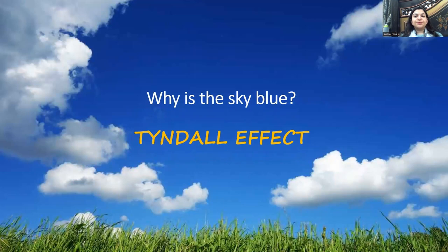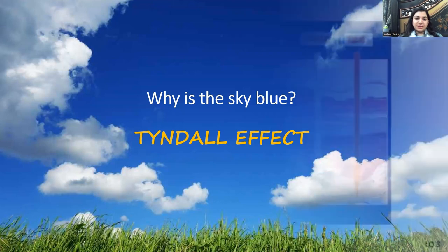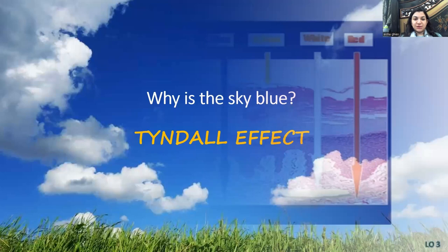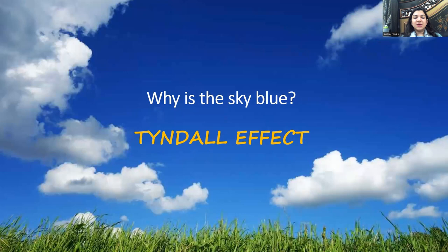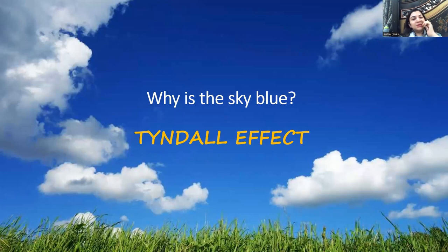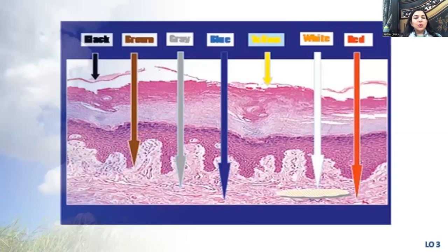Another important concept: why is the sky blue? Because of the Tyndall effect. Light from the sun vibrates in different directions and belongs to different wavelengths, but the blue wavelength scatters 16 times more than the rest. That's why we see so much blue. Beyond the atmosphere there is no scattering, so the sky appears black.